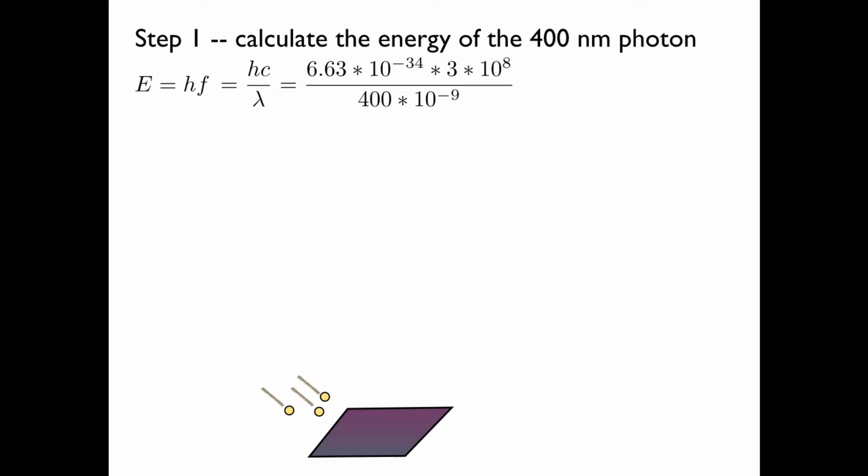We can plug in what we know, the constants, and 400 nanometers in the denominator. We obtain a value for the energy of the photon.